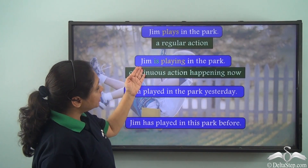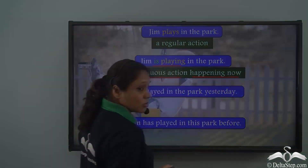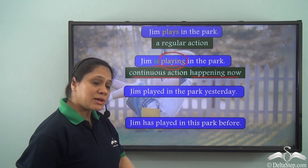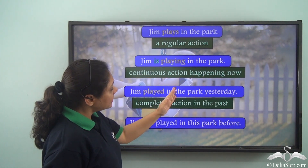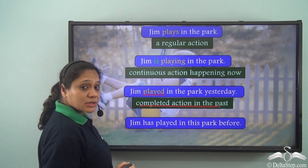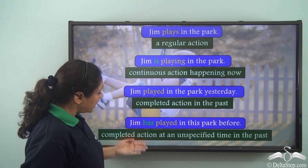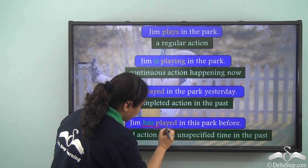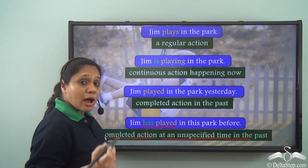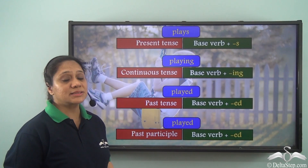When I say Jim is playing in the park, 'is playing' tells us that a continuous action is happening now. The verb form 'playing' tells us that an action is continuous. If I say Jim played in the park yesterday, the verb 'played' tells us that an action happened in the past. When I say Jim has played in this park before, 'has played' tells us that a completed action happened at some time in the past, and the verb form here is 'played'.